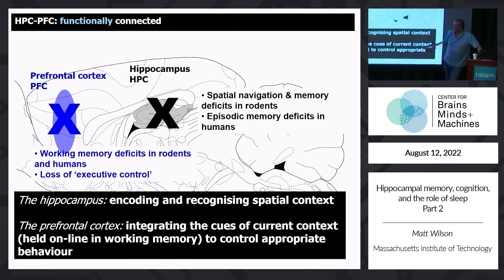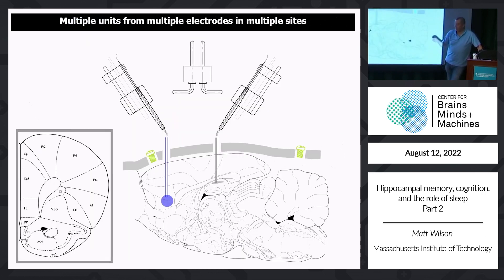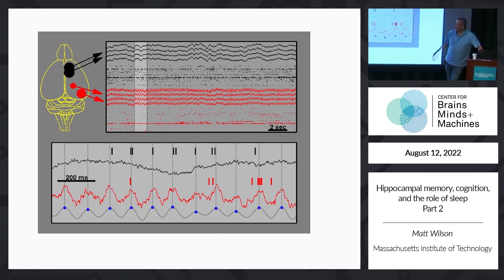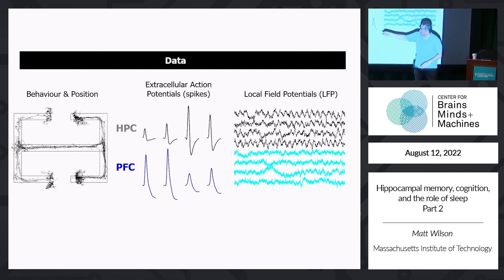Lesions to either the hippocampus or prefrontal cortex impair performance on a choice task. Damage the hippocampus, you have trouble; damage the prefrontal cortex, you have trouble. So asking how hippocampus and prefrontal cortex interact and communicate — and what this might have to do with the theta oscillation — is the next question. Matt Jones did simultaneous recordings in hippocampus and prefrontal cortex, looking at spiking and local field potentials in a variant of the T-maze task.